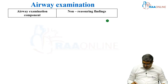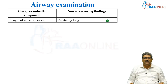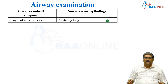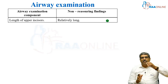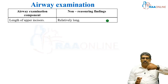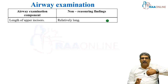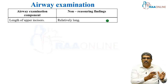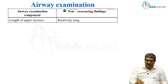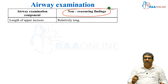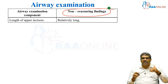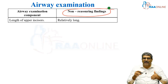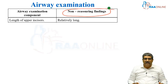Coming to the various aspects of airway examination: the length of the upper incisor. If the incisor is going to be long, your laryngoscopy is going to be difficult. In this case, you are going to have non-reassuring findings which might make your airway management slightly difficult.